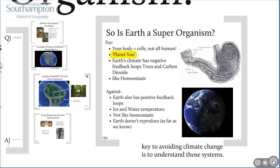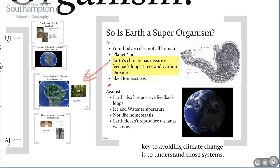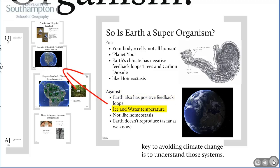Another point is that Earth has negative feedback loops, like the trees and carbon dioxide system we looked at, and negative feedback is a characteristic of homeostasis. But there are arguments against: Earth also has positive feedback loops, like the ice and sun system, which is less like homeostasis.